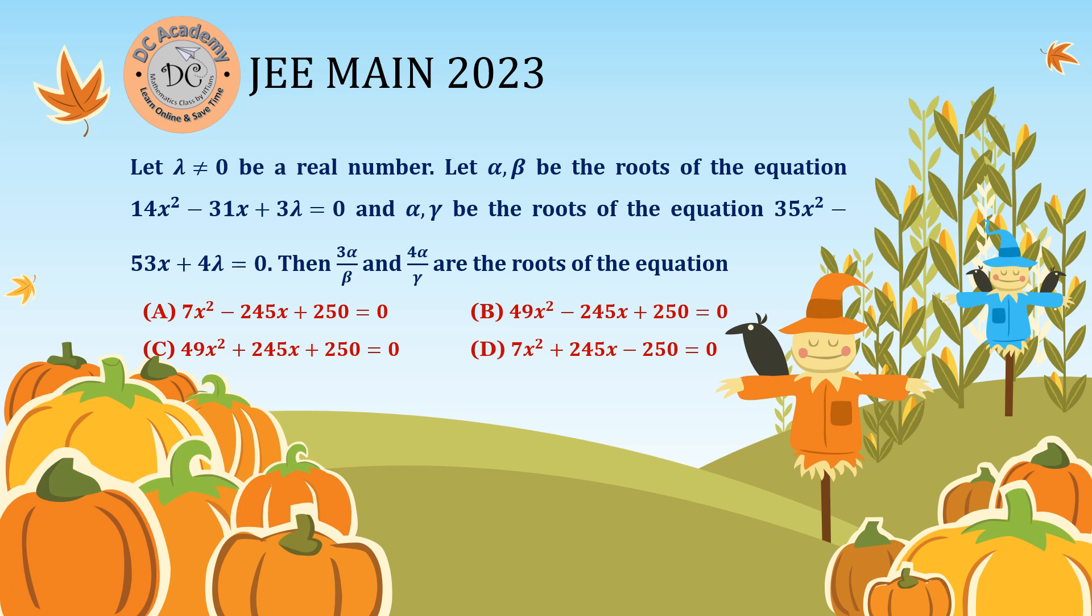By applying quadratic equation properties, we first need to find α, β, α, γ or some relation between them. Then we need to find a quadratic equation whose roots are 3α/β and 4α/γ. Let's solve this problem.